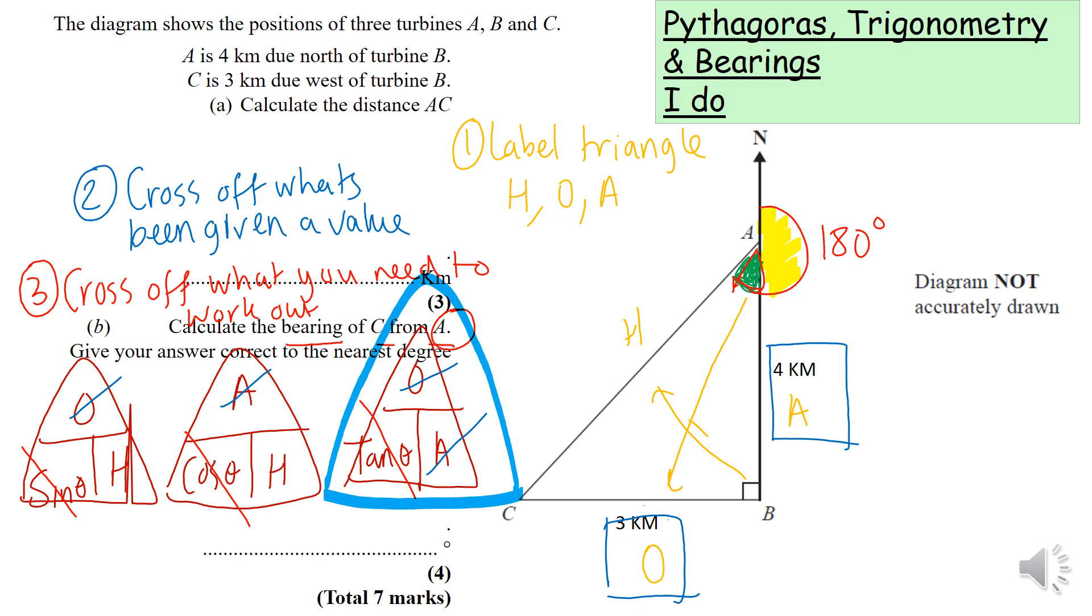If you pop that into the calculator, you can see it's not an angle. To convert it, you need to press shift and tan, then 3 divided by 4 into your calculator. Make sure it's in degrees mode. This should give you the answer of 36.869.